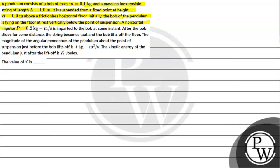A horizontal impulse P having value 0.2 kg meter per second is imparted to the bob. At some instant, after the bob slides some distance,